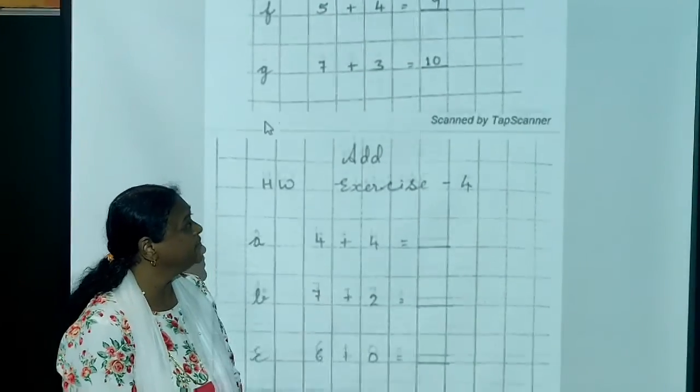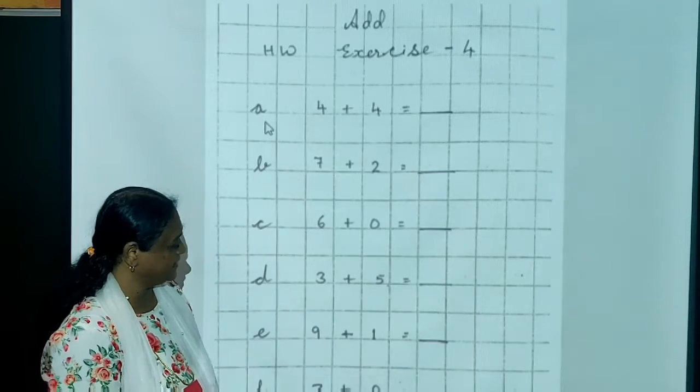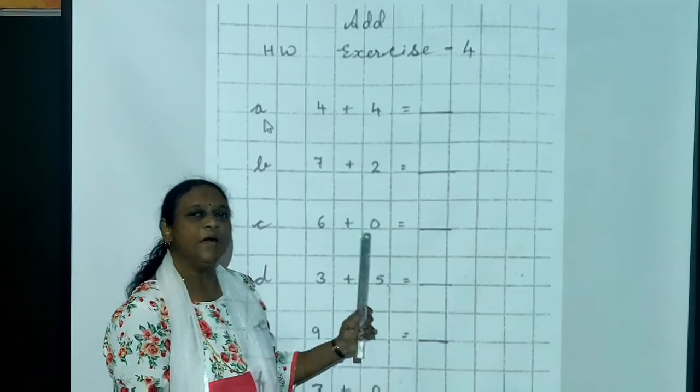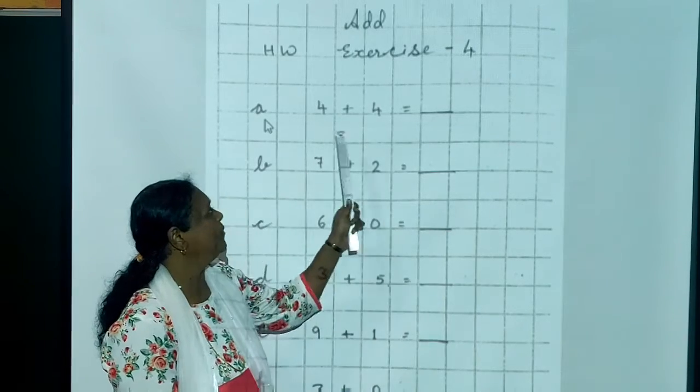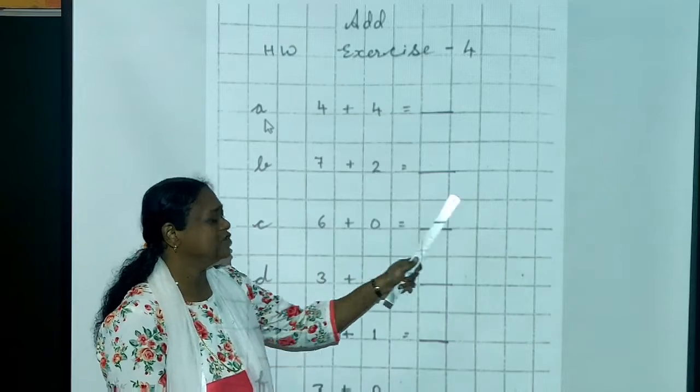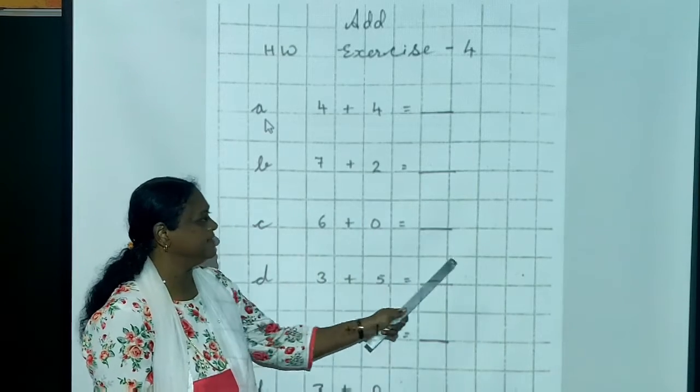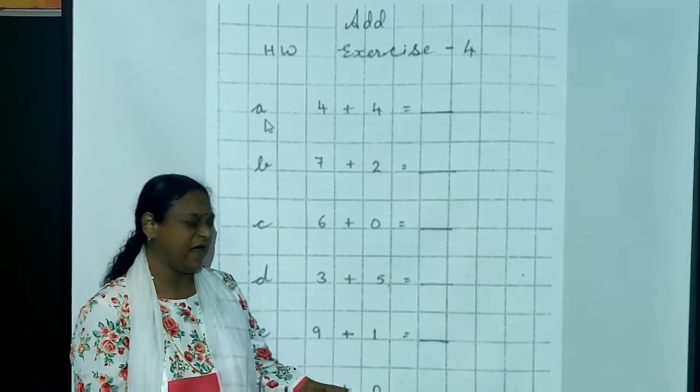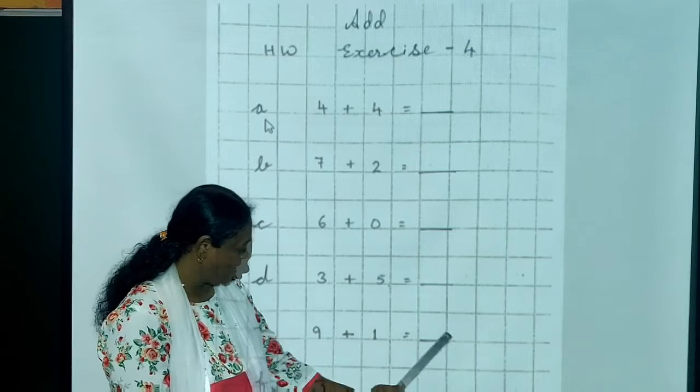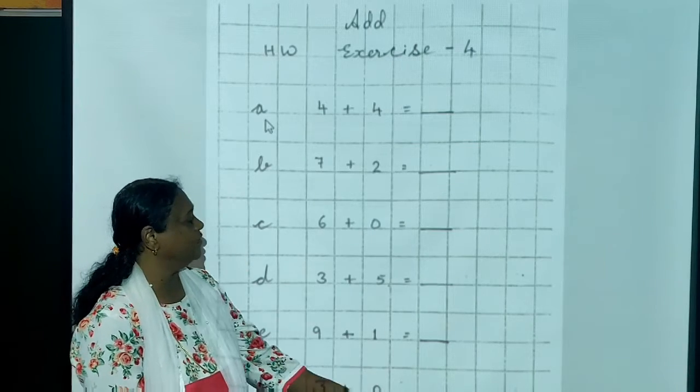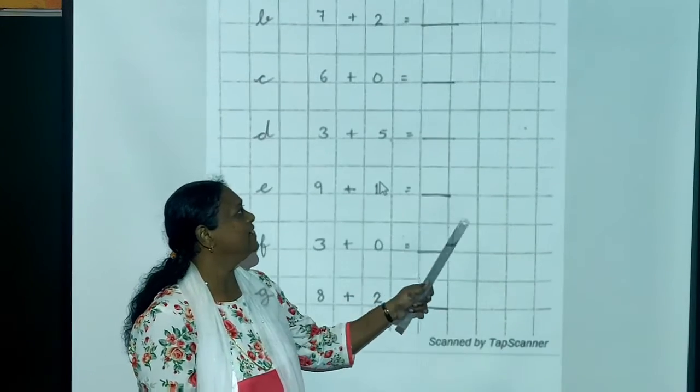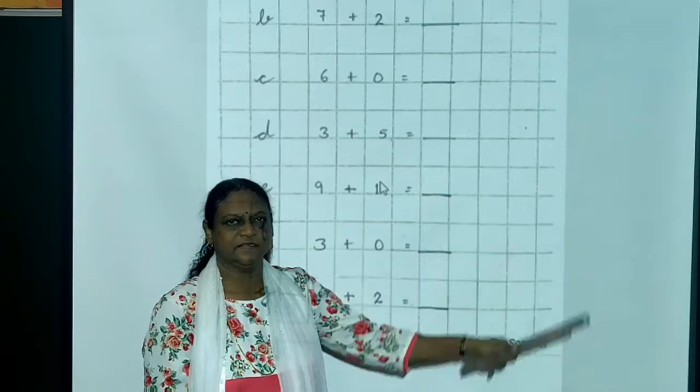Now, this is the fourth exercise which you have to do by yourself. 4 plus 4. 7 plus 2. 6 plus 0. 3 plus 5. 9 plus 1. 3 plus 0. So, 6 plus 0 is? Answer will be 6.